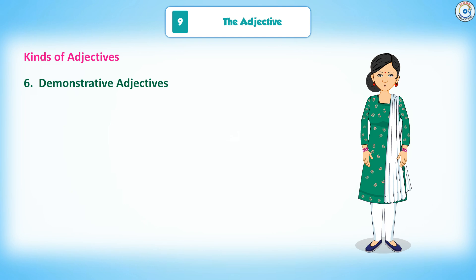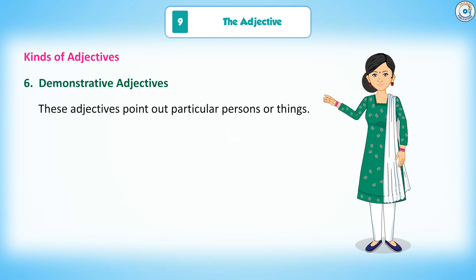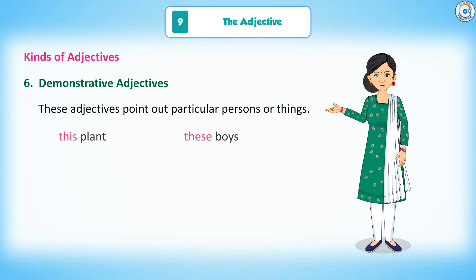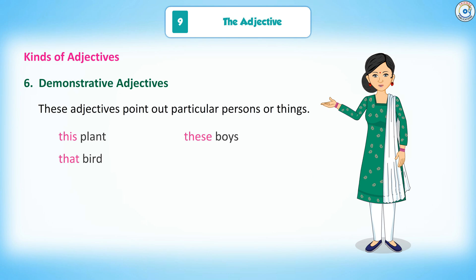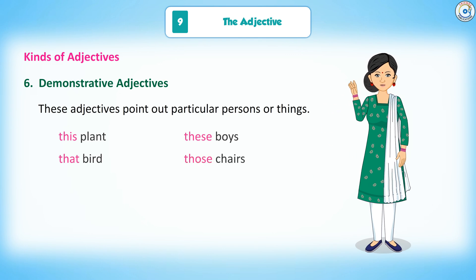6. Demonstrative adjectives: These adjectives point out particular persons or things. Examples: this plant, these boys, that bird, those chairs.